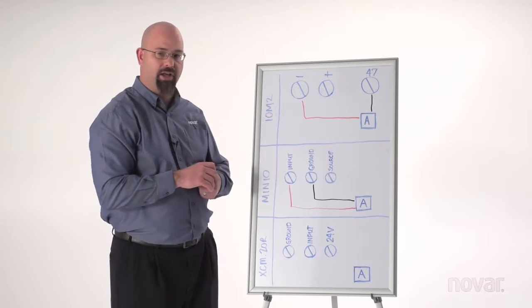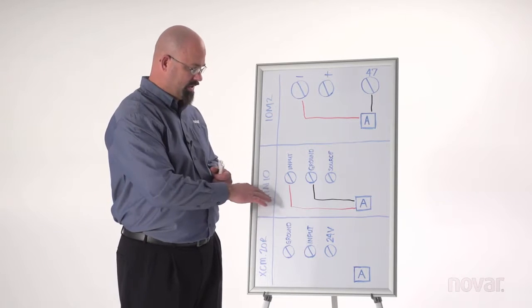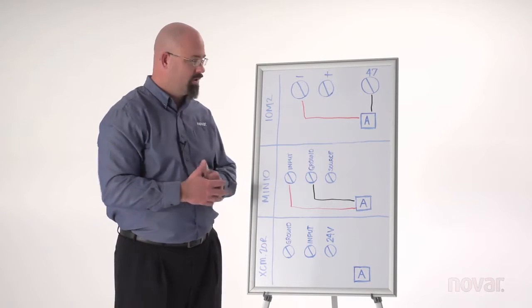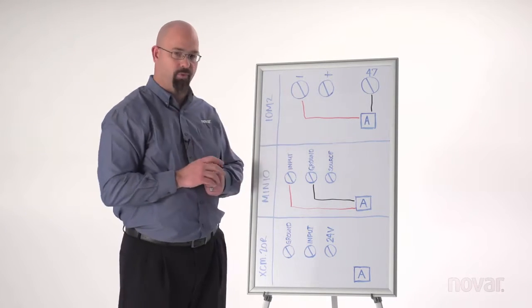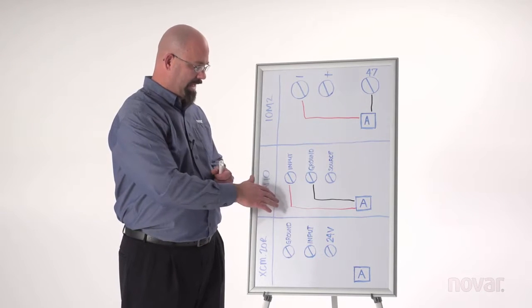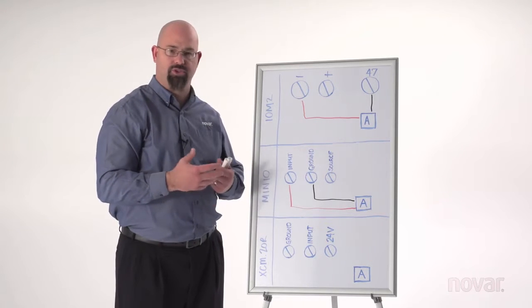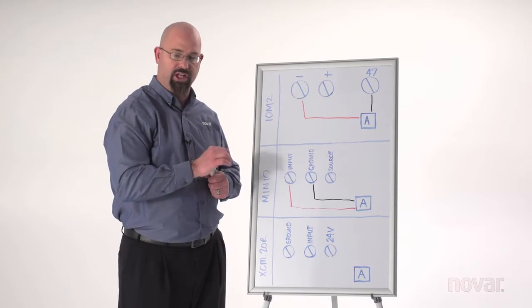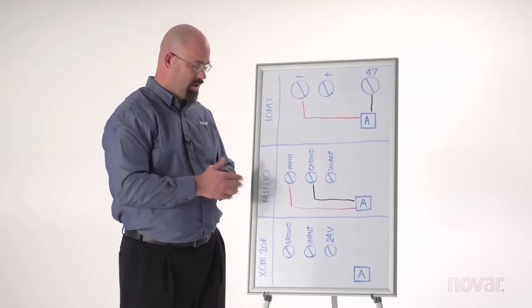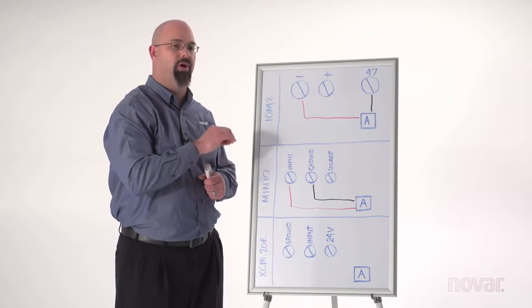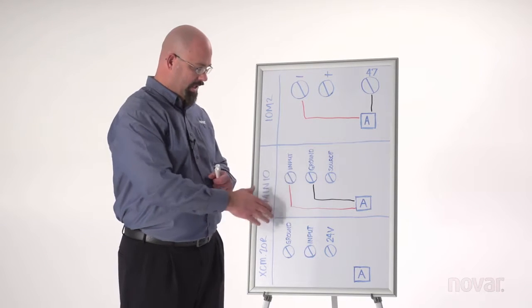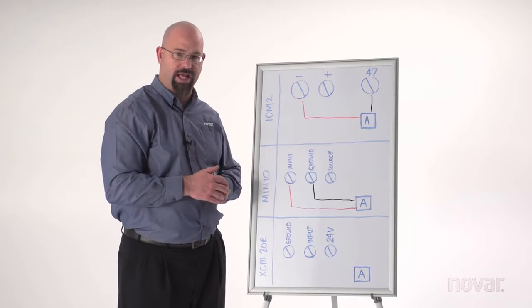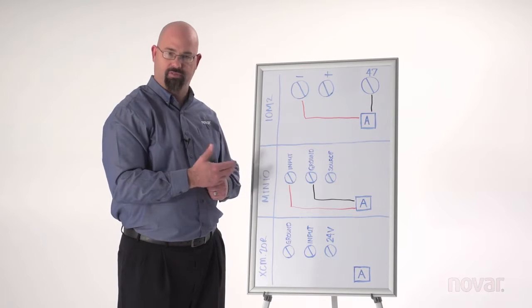Now one exception with this MIN-IO versus the IOM here is this is more universal inputs. The IOM-2 can only be a 4 to 20 milliamp. With the MIN-IO this can be 4 to 20 milliamp, 0 to 10 or 1 to 5. Here we'll have to move that jumper on each of the six universal inputs. So if it was a 4 to 20 milliamp we'll put that jumper on I or 4 to 20. If it was a 0 to 10 or 1 to 5 we'll put that jumper on V for voltage.